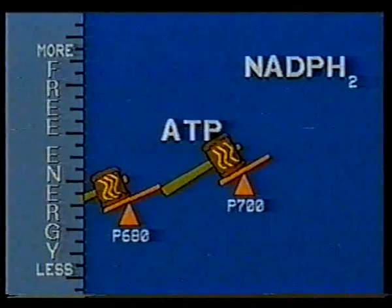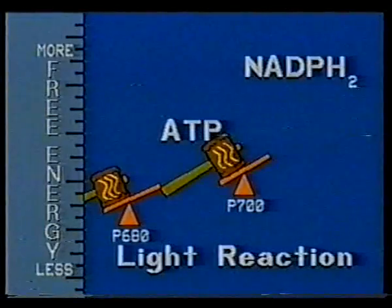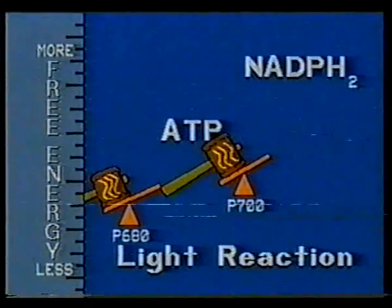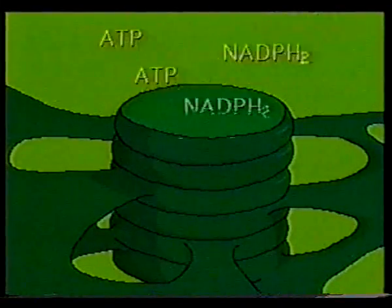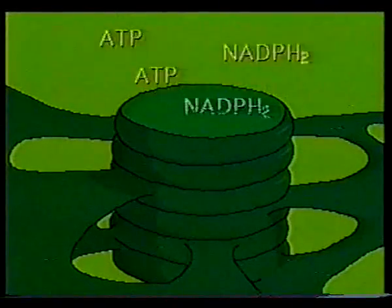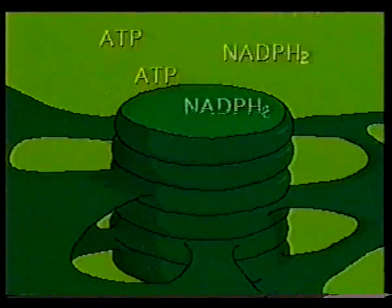These energy carrier molecules are the key product of the light reaction. They apparently move across the thylakoid membrane into the stroma, the fluid surrounding the thylakoid. Within the stroma, a second reaction sequence occurs, called the dark reaction, because it is independent of light.